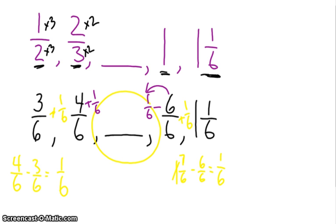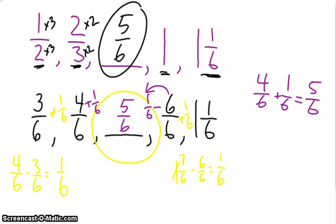Or, I can do 4 sixths plus 1 sixth. So, for me, I love adding, and I'm going to do 4 sixths plus 1 sixth equals 5 sixths, and that is going to be my missing answer. So, my answer is 5 sixths, and once again, the rule, if it asks you for the rule, is increasing, I'm going to increase by 1 sixth. Okay, good luck.